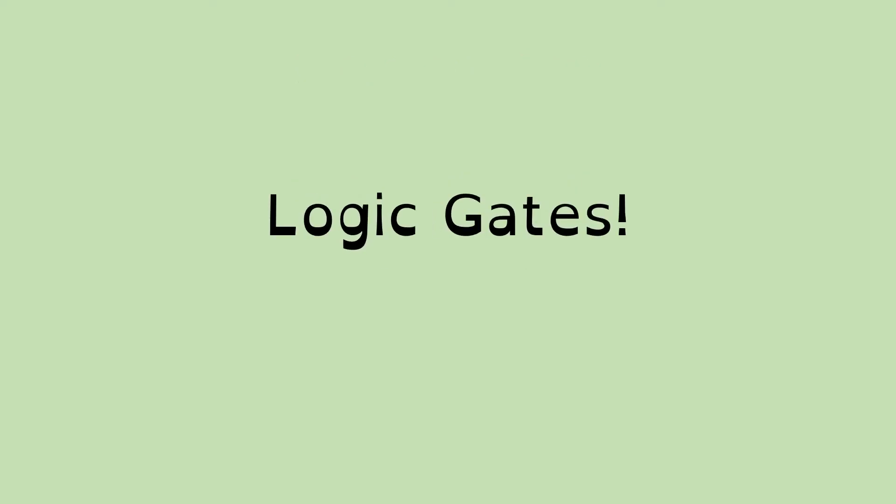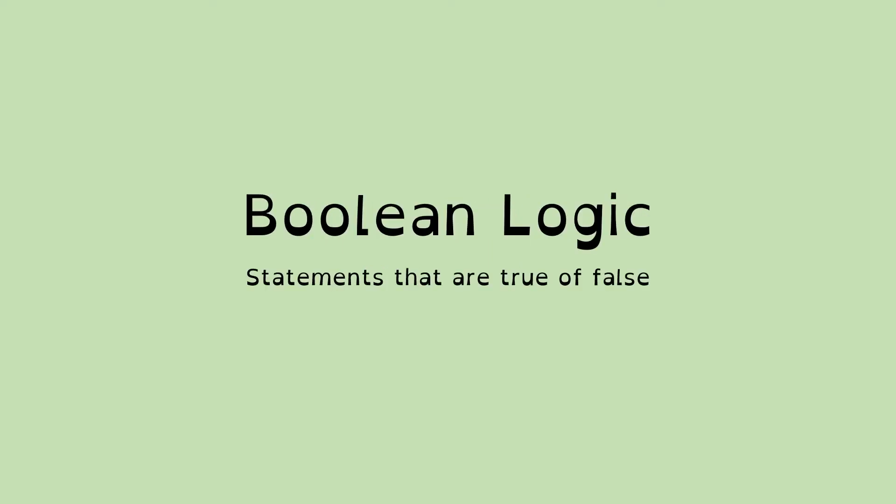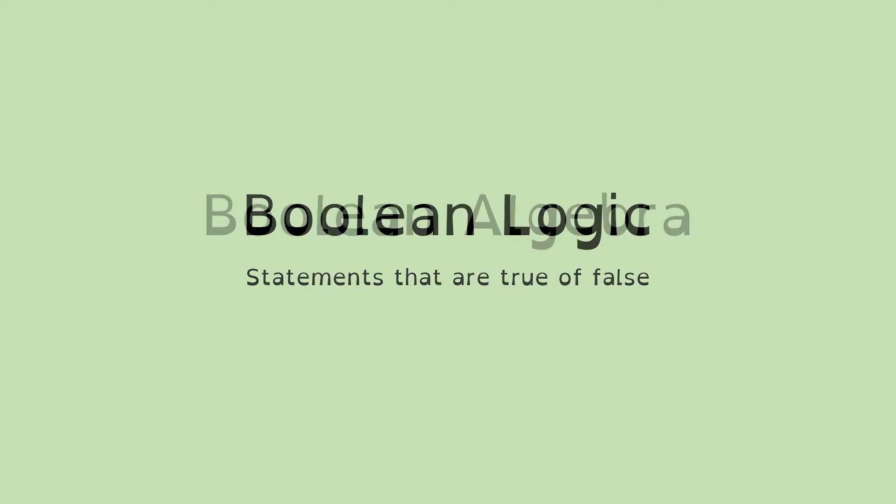So now we're going to talk about logic gates. What are these things, logic gates? Let's step back into our binary and our Boolean logic and have a quick look at them. Boolean logic is about statements that are true or false, and Boolean algebra is a branch of algebra where you can write it as if it was maths, and it has variables that hold these values true or false.